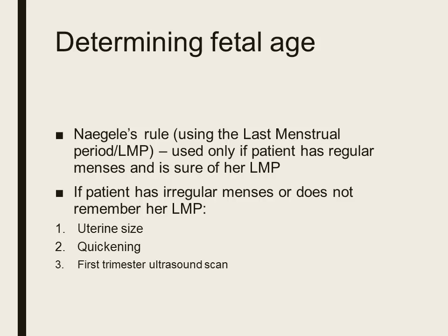Here are some of the ways of determining fetal age. First is Naegele's rule, which is used only for patients with regular menses or for patients who are sure of their last menstrual period, or LMP. For patients who have irregular menses or do not remember their LMP, we can base fetal age on uterine size, quickening, or first trimester ultrasound scan.